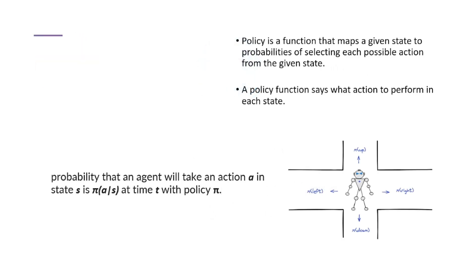Now let's talk about policy, which is basically the agent's strategy. A policy maps each state to a probability distribution over actions. In simpler terms, a policy tells the agent what to do in any given state. For example, if the agent is in state S, the policy will decide which action is best, or at least which action has the highest probability of success. The agent's job is to improve its policy over time so that it can make better decisions and maximize rewards.